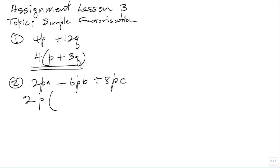2P into 2PA is A. Minus: 2 into 6 is 3, P cancels out, you are left with B, so 2P into 6PB is 3B. Plus: 2 into 8 is 4, the P cancels out there, you are left with C, so 2P into 8PC is 4C.